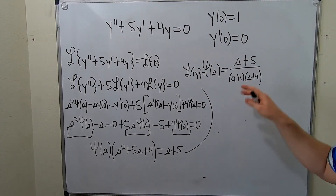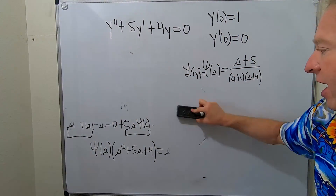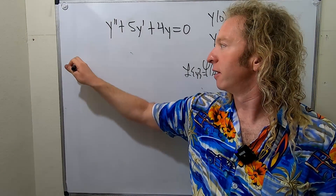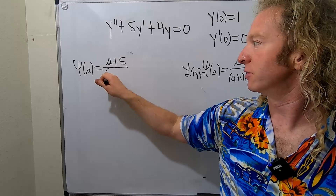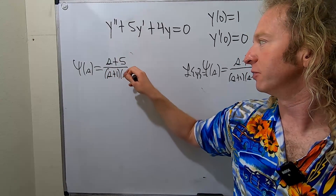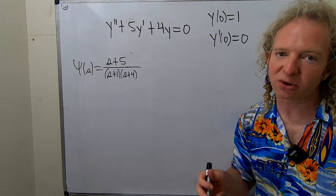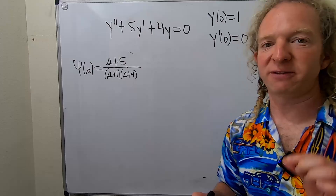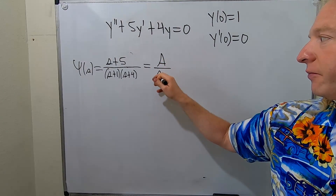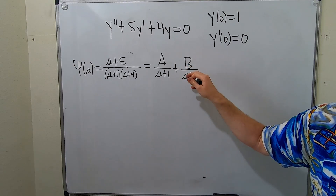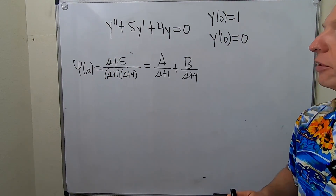We're going to use partial fractions. So Y(s) equals (s + 5) divided by (s + 1)(s + 4). Since we have distinct linear factors, we can write this as A over (s + 1) plus B over (s + 4), and we'll use the cover-up method — also called the Heaviside cover-up method, named after Oliver Heaviside. It's worth getting good at because it's very powerful.